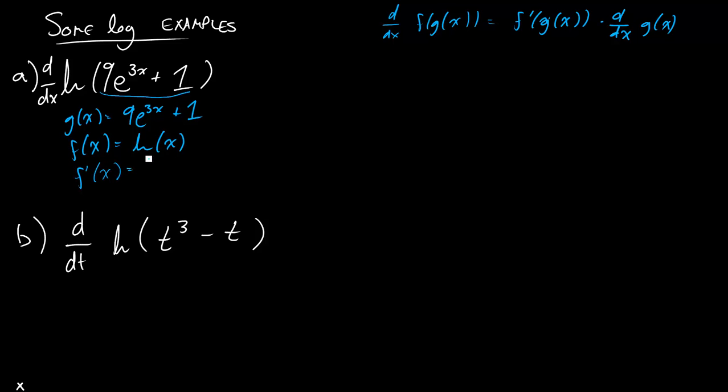Well f prime of x, the derivative of ln of x, is just 1 over x, right? And so what the formula tells me is that I want to take f prime, except I replace the input with g of x. So that's the first part. So I just do 1 over 9e to the 3x plus 1.